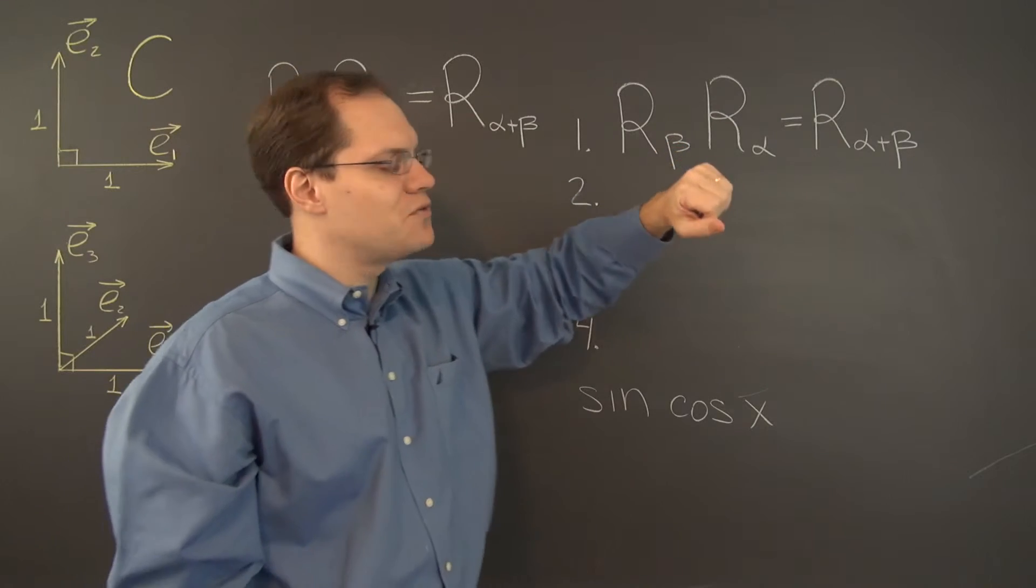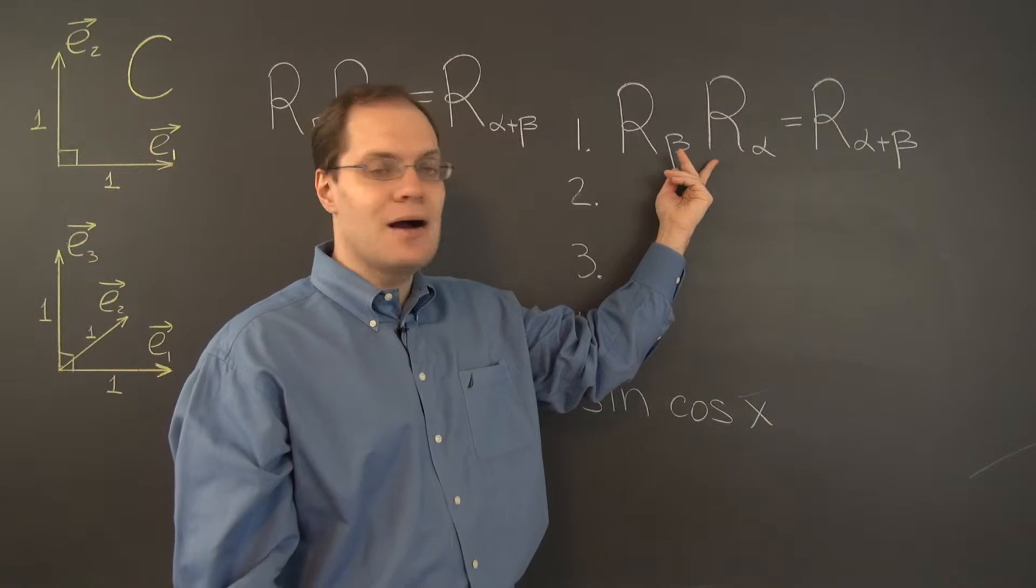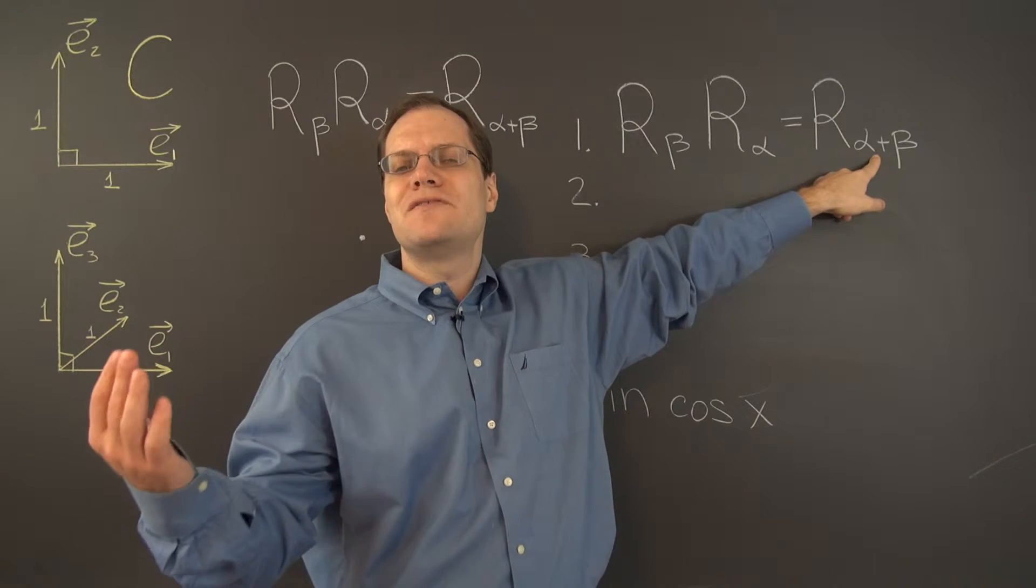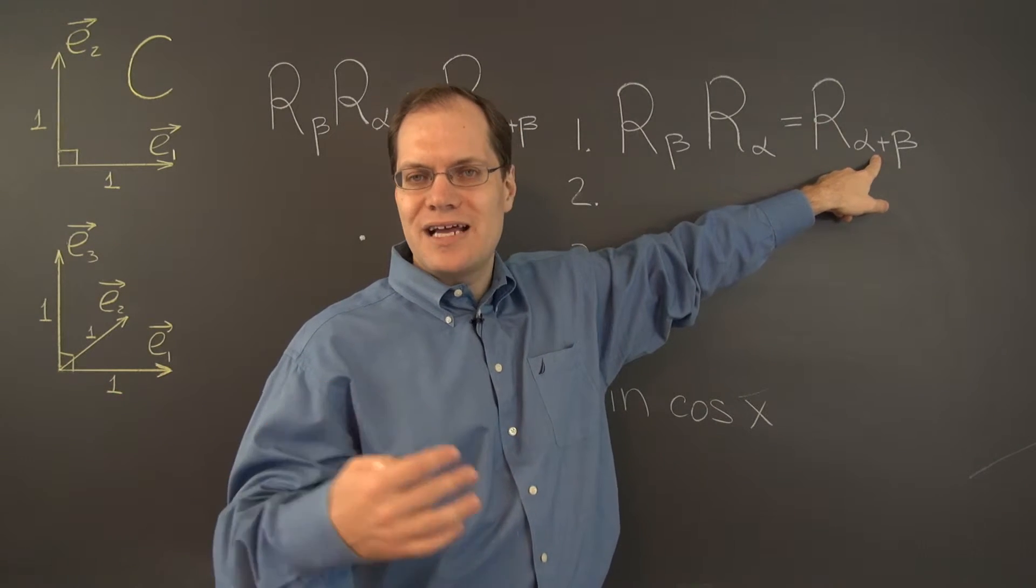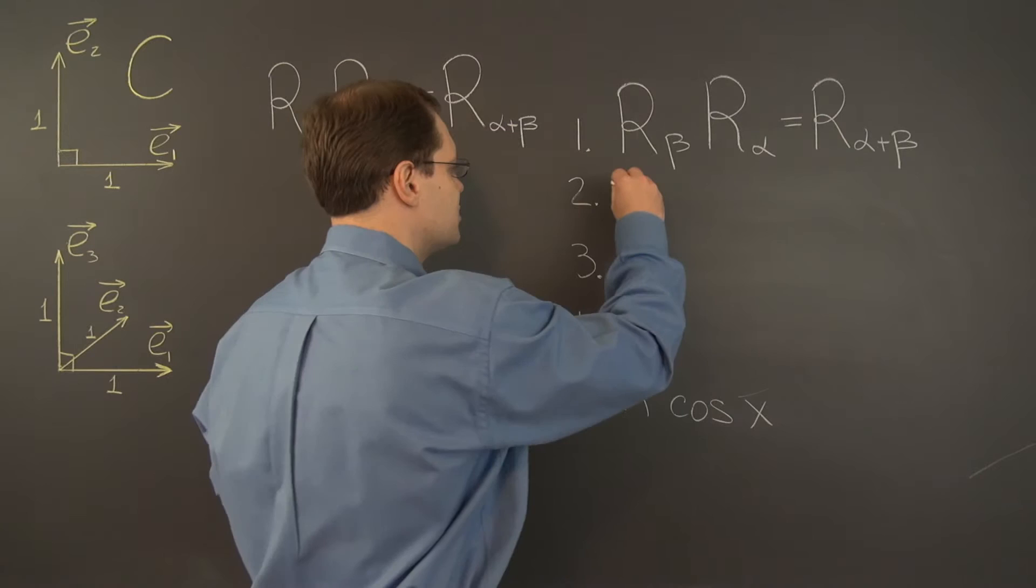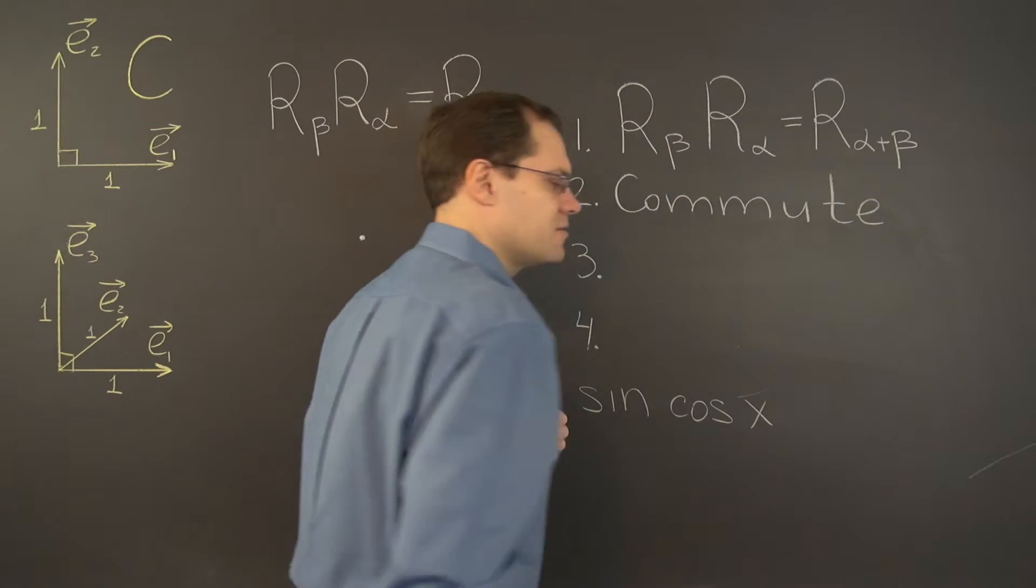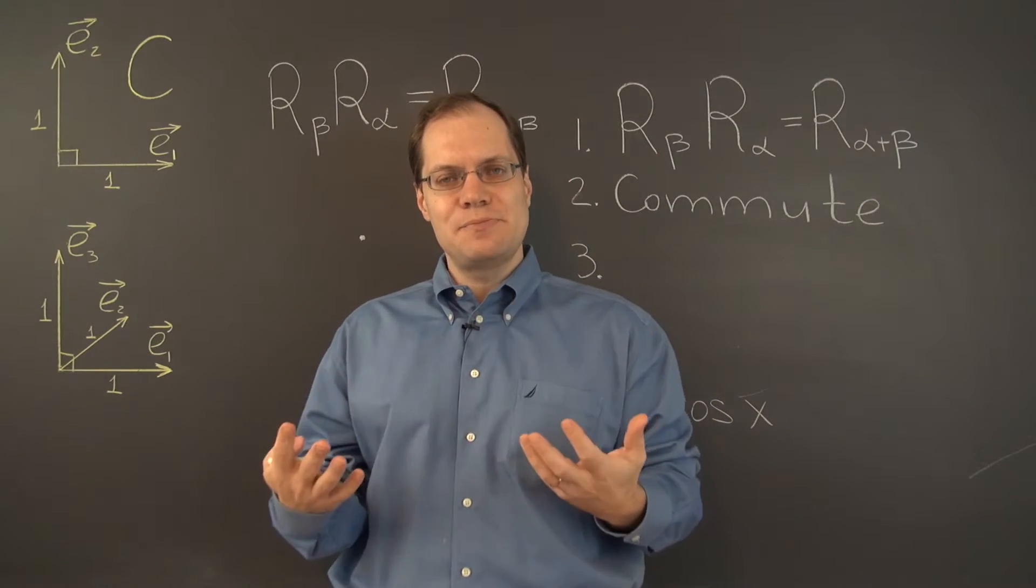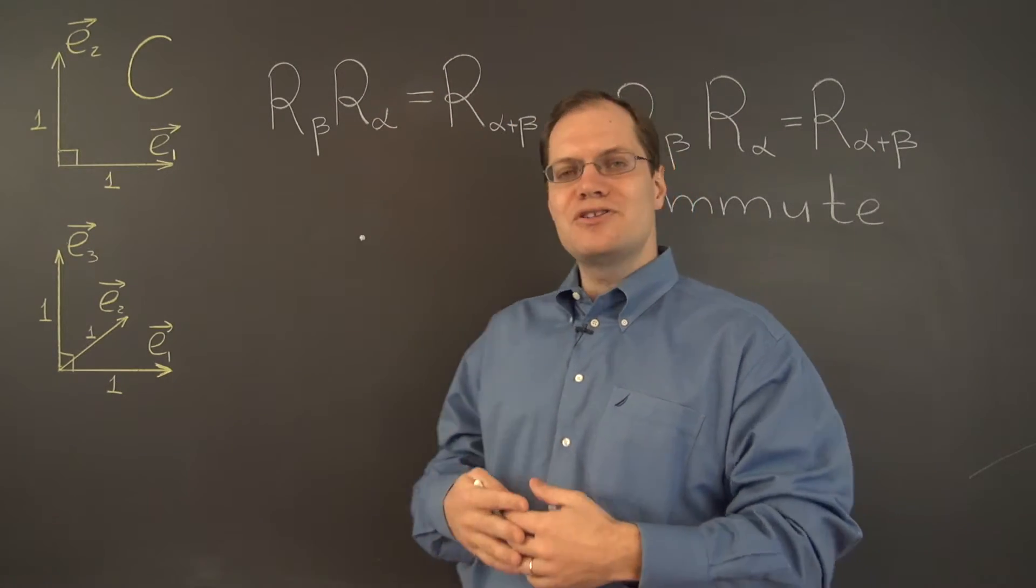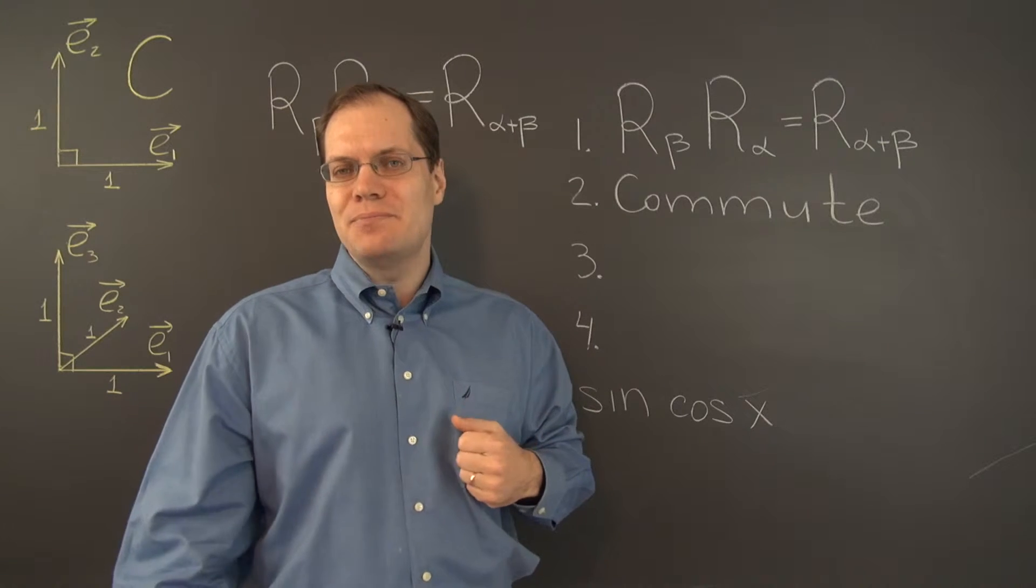Now first consequence of this formula is that these two rotations commute. Because if we did these rotations in the opposite order, it would still be R sub, maybe beta plus alpha. But of course there is no difference whatsoever between beta plus alpha and alpha plus beta. So the order of these two doesn't matter. So these two rotations commute, which is a little bit unexpected because we expect, generally speaking, transformations not to commute. But this is a special case. And if I had to give an intuitive reason for why these matrices commute, it's because it's just so simple there is nowhere to go. Not a very good explanation, but maybe better than nothing.